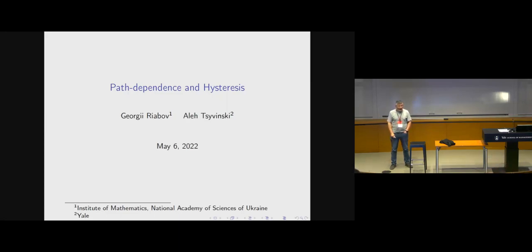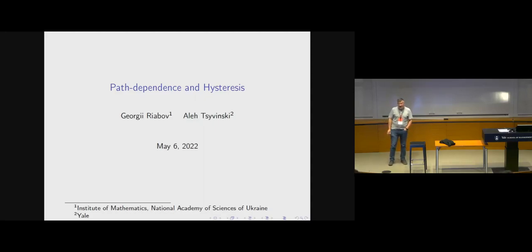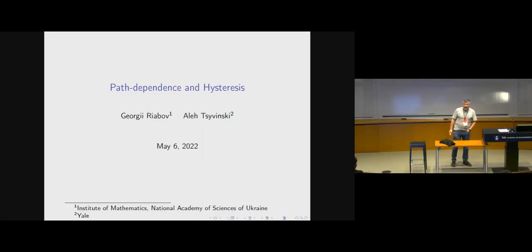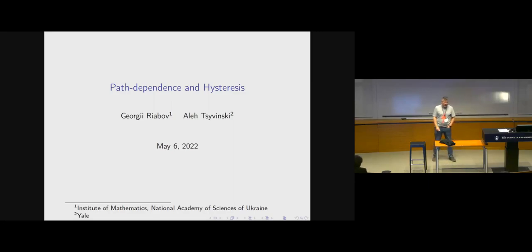Thank you, everybody, for being here. This is joint work with Georg Ryabov. He's a mathematician working in stochastic analysis at the National Academy of Sciences of Ukraine. He's actually in Kyiv now. It's also nice to think of those over there while we think about path dependence and what they have to go through, unfortunately.